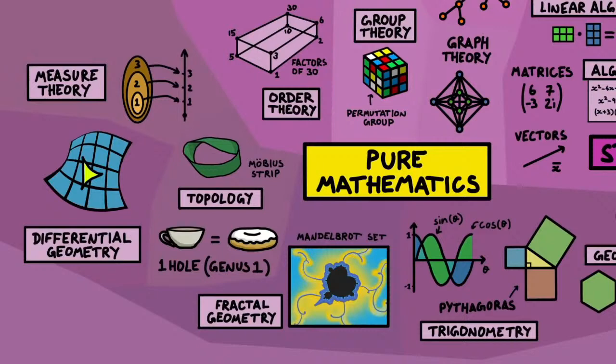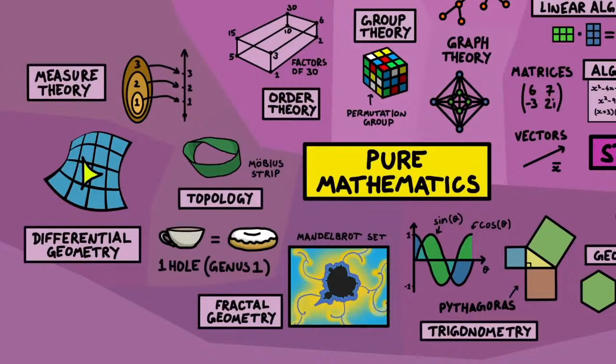And finally differential geometry looks at the properties of shapes on curved surfaces, for example triangles have got different angles on a curved surface, and brings us to the next section which is changes.